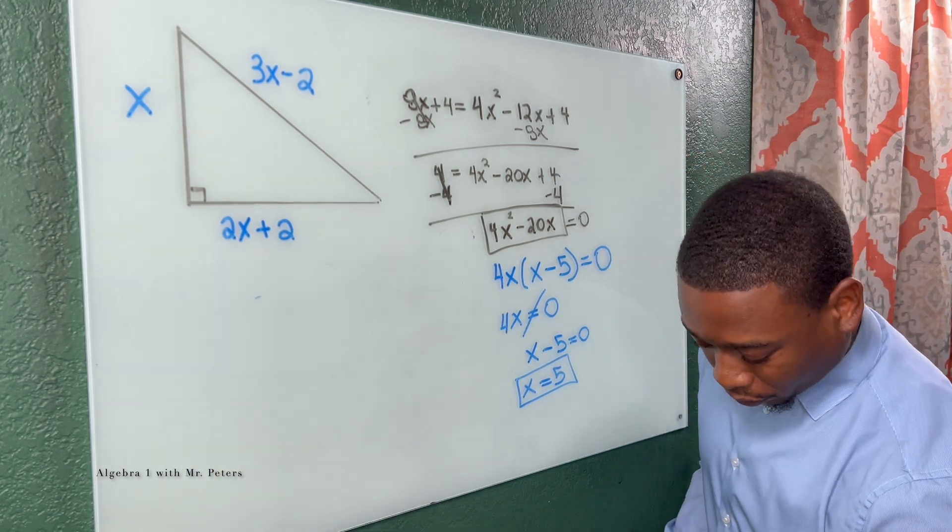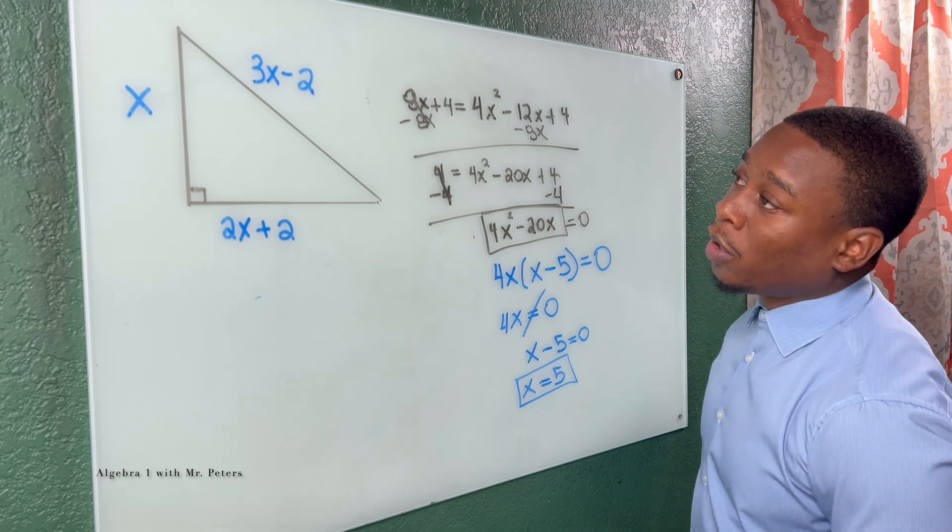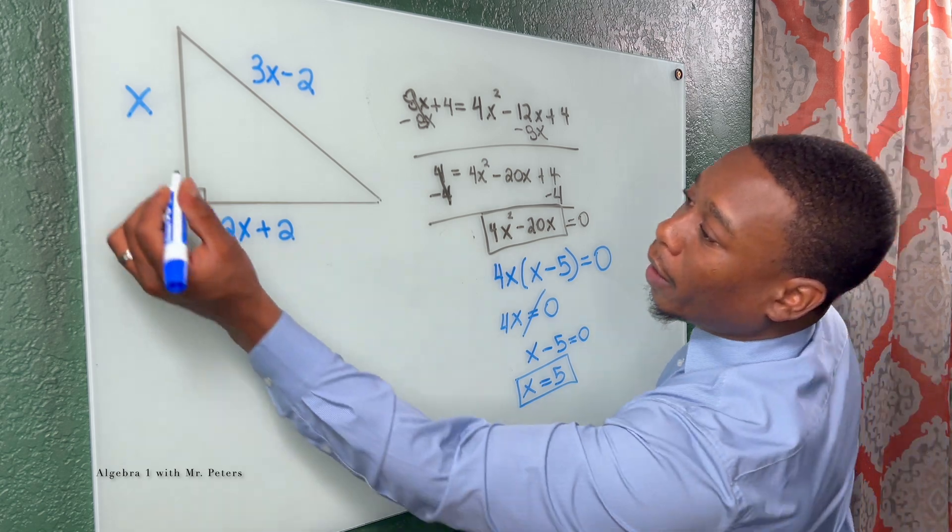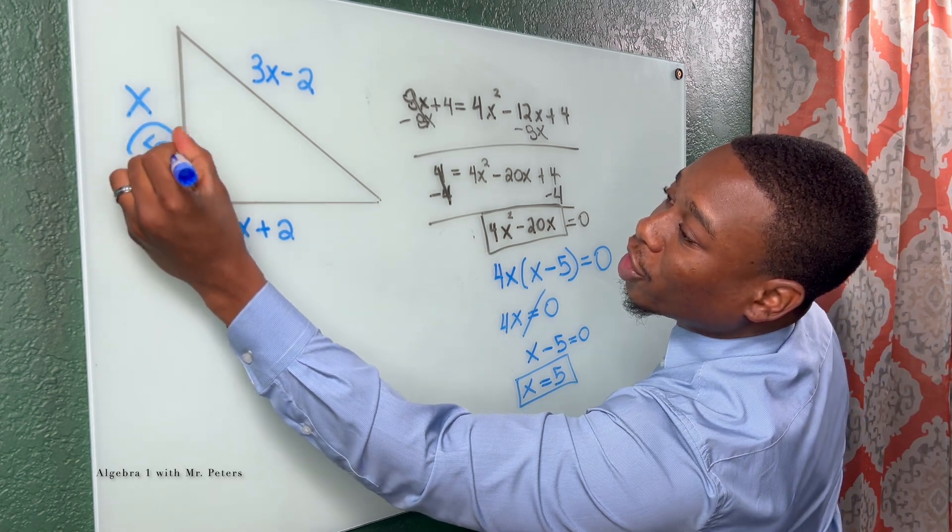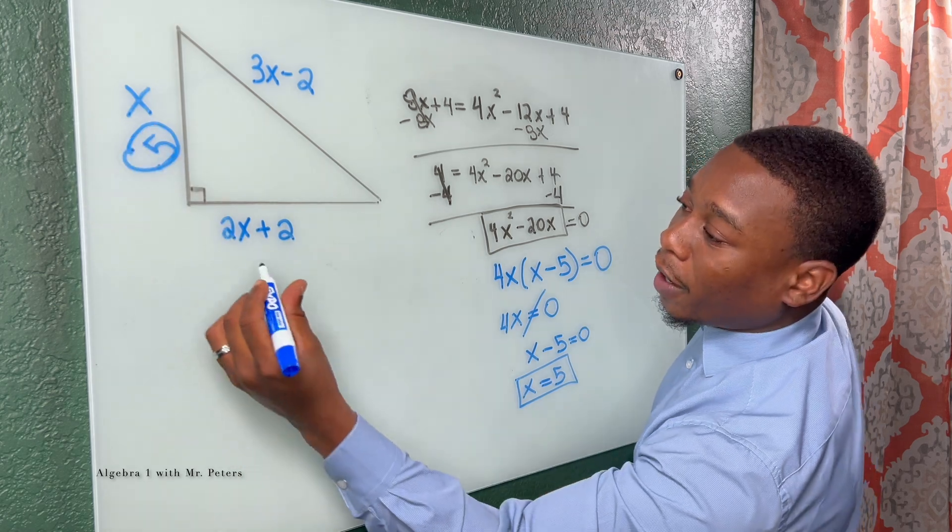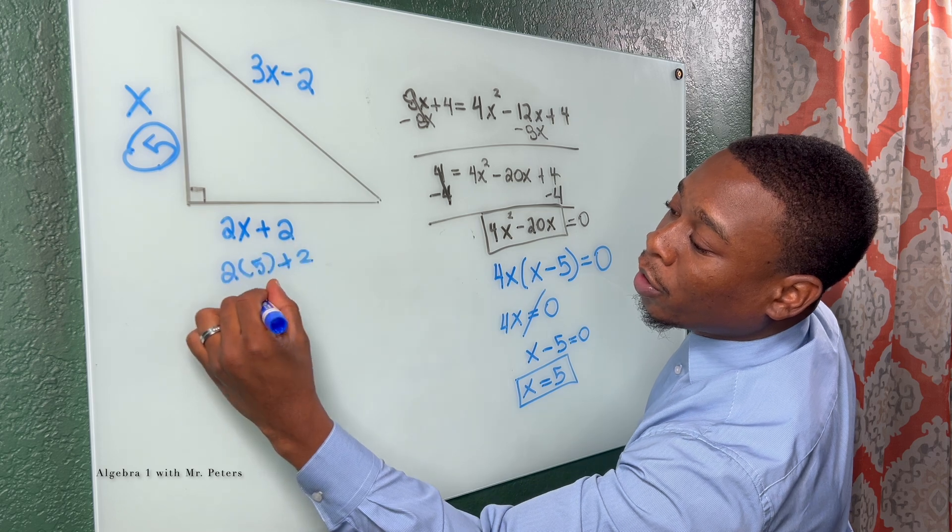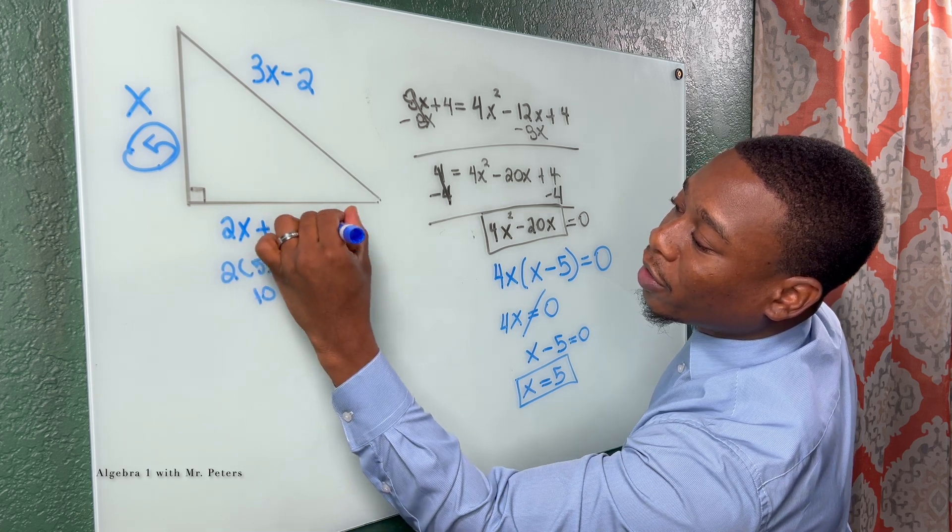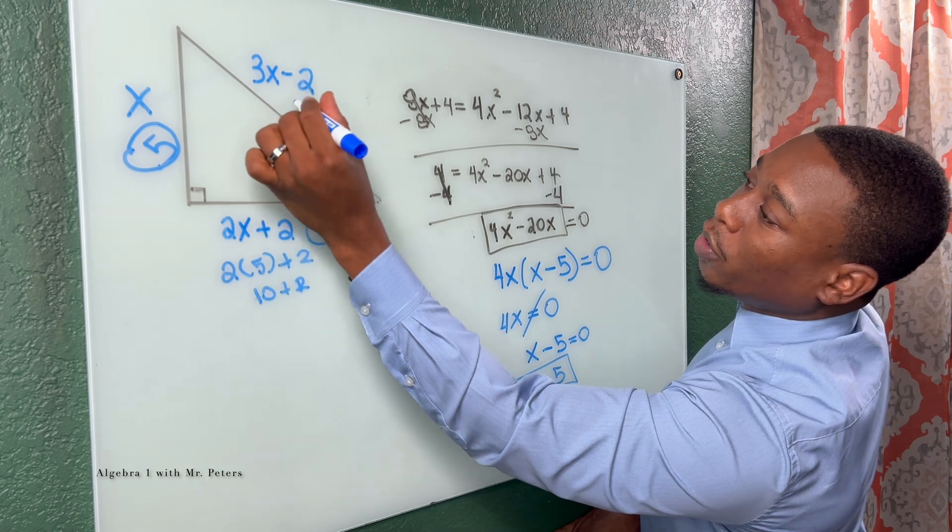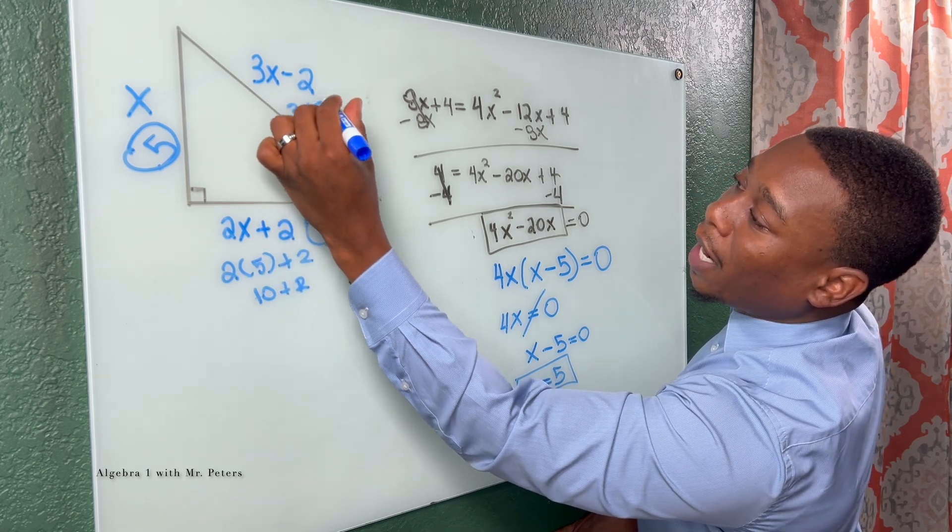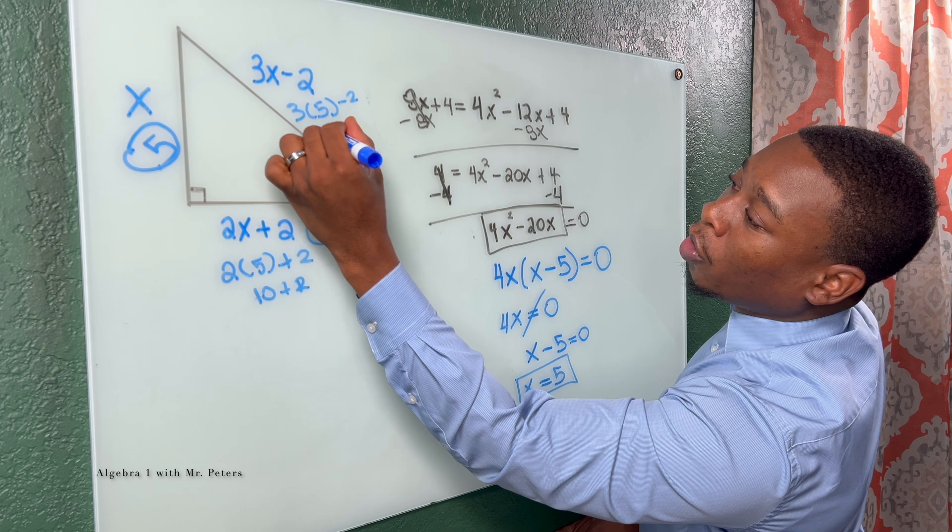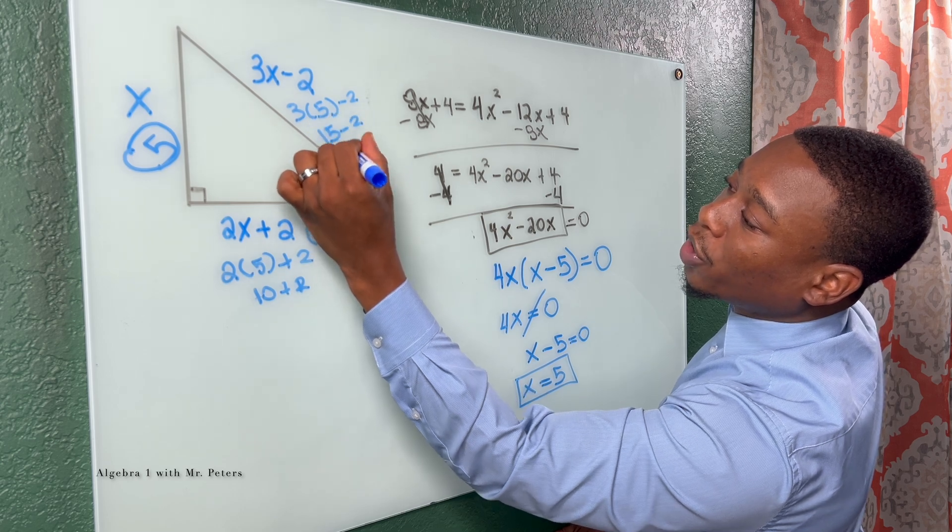All right, so now we go back in and we're going to substitute. So once I go in, I know that this side is 5 because that's what X is. This side is 2 times 5 plus 2. So this is 10 plus 2. This side is 12. And then once we do the third side, 3 times 5 minus 2, we get 15 minus 2, which is 13.